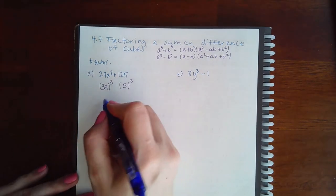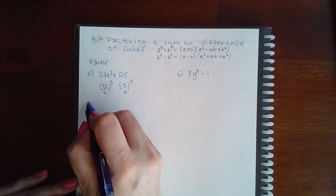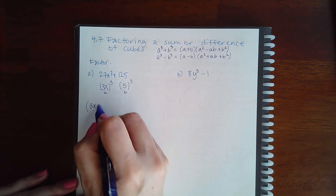Now I have these. This is like my a and this is like my b. So what I'm going to do is I'm going to write a plus b, so 3x plus 5.